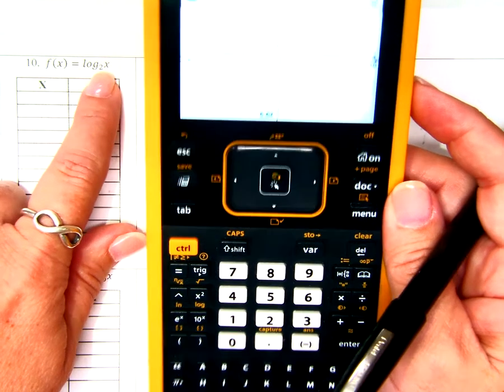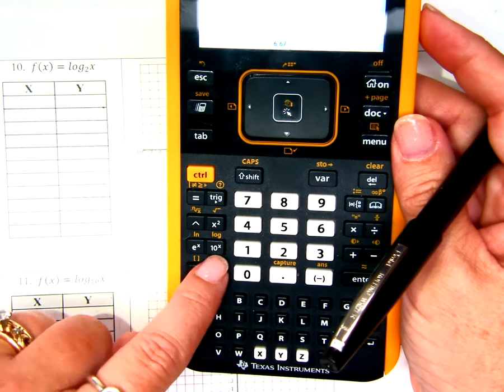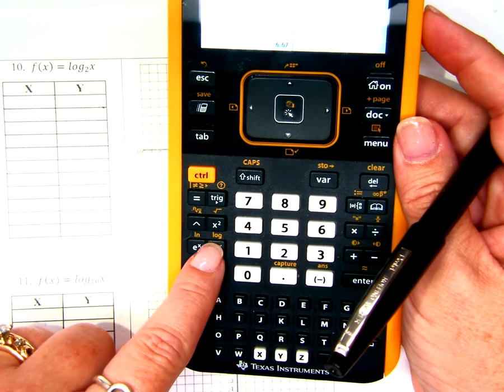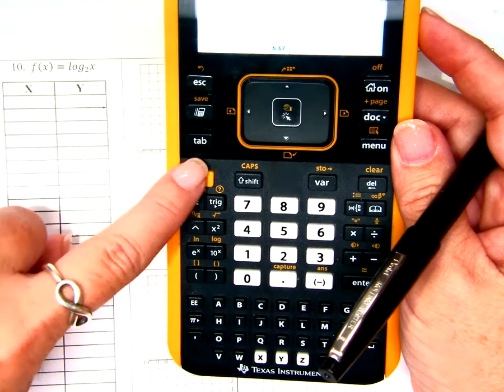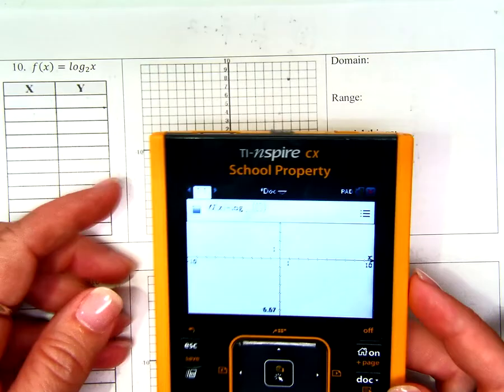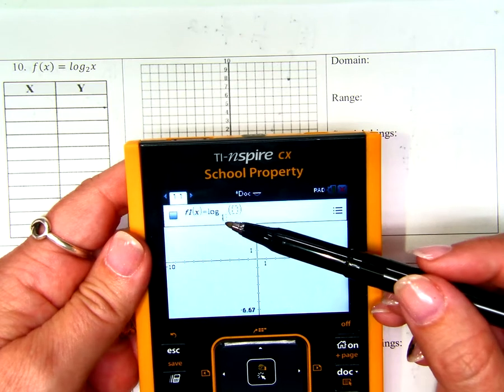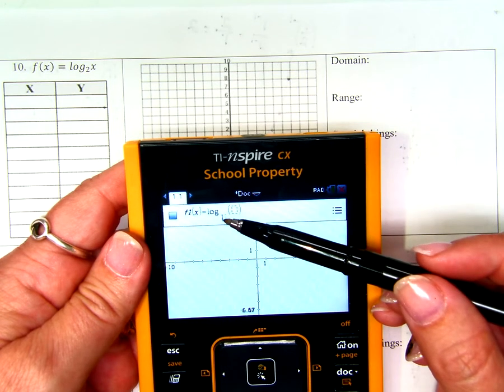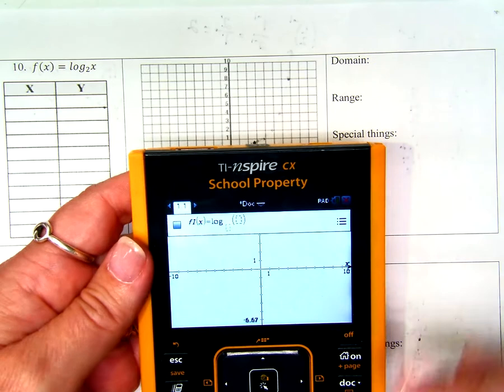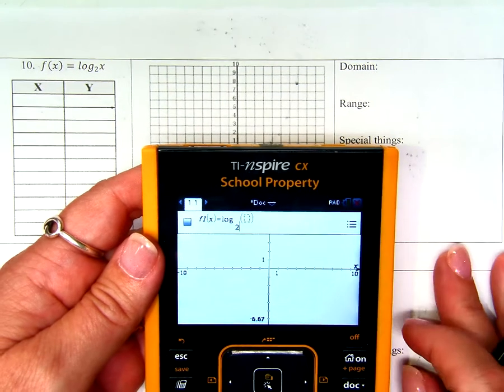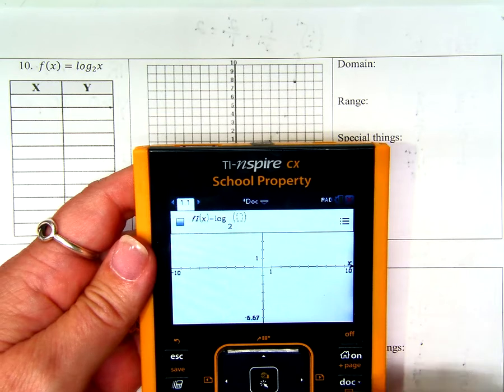Now, log base 2 of x is how I read that. Log base 2 of x. So, do you see the log button? It's in yellow, right above the 10 to the x power button. So, I've got to press control, 10 to the x power, for log to show up. Now, notice where the cursor is right now. It's down below. It's in the place for the base. What did we say the base is of this problem? A 2. Enter a 2.